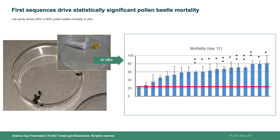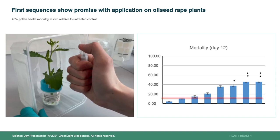We want to move as quickly as possible to a field-based assay. The first promising sequences were moved to a lab-based plant assay. On the left panel, there's a canola plant with a perfume sprayer containing double-stranded RNA being used to apply it to the canola plant. That canola plant is then infested with pollen beetle and placed in a caged environment so the beetle can't escape and is allowed to feed. On the chart on the right, each bar represents a different gene being tested, and some of those genes are significantly better than the negative control, showing up to 45 to 50% mortality of pollen beetle at day 12.